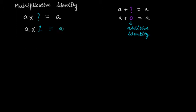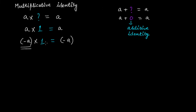The answer is: a times 1. If you multiply any number with 1, this will give you a. Whether it is a positive integer or a negative integer — even if it is a negative integer, if you multiply it with 1, you get that same negative integer, minus a, because the outcome should be that particular integer itself. You can check with any example: 10 times 1 is 10, so the outcome is 10 and the integer is 10 — satisfying the multiplicative identity.